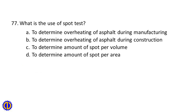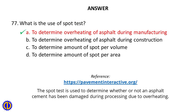Question 77. What is the use of the spot test? A. To determine overheating of asphalt during manufacturing, B. To determine overheating of asphalt during construction, C. To determine amount of spot per volume, D. To determine amount of spot per area. Answer: A. To determine overheating of asphalt during manufacturing. Reference: PavementInteractive.org. The spot test is used to determine whether or not an asphalt cement has been damaged during processing due to overheating.